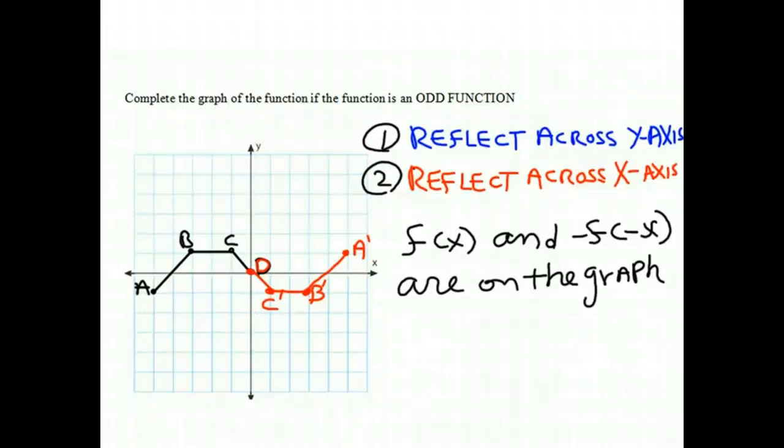Now, why don't we just show at least one of these points really reflects the definition of what an odd function is. Remember that we said that f of x and negative f of negative x must be equal if this is an odd function.